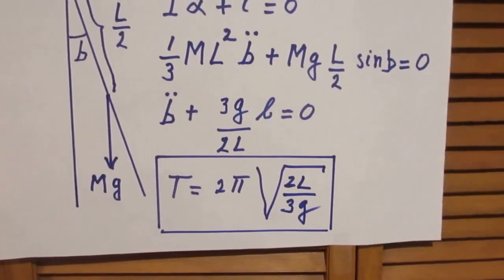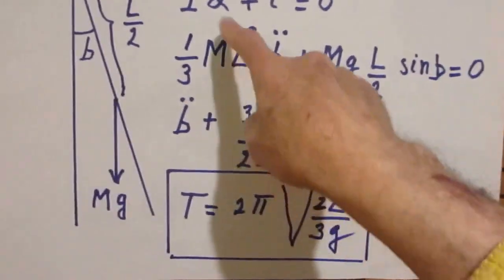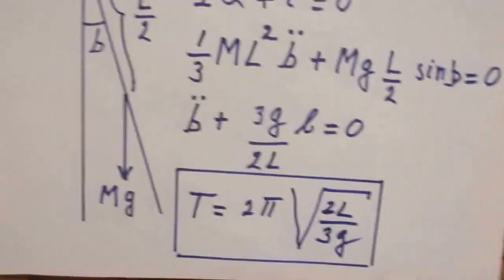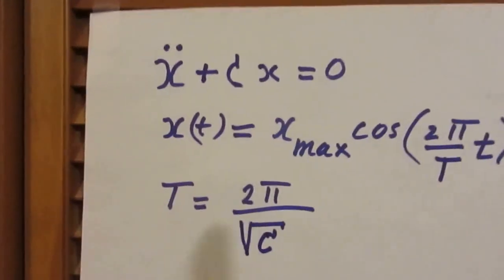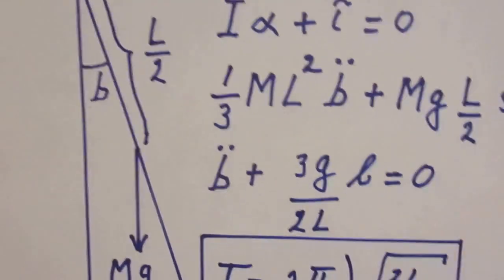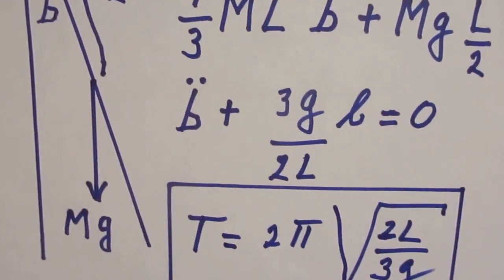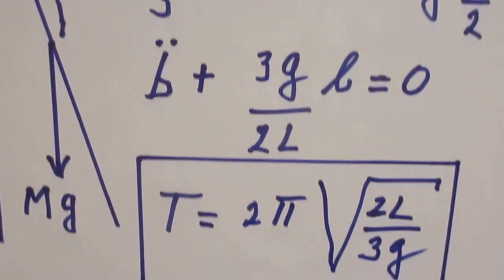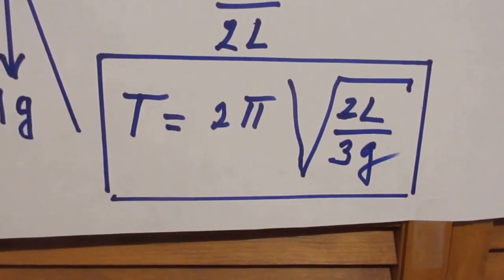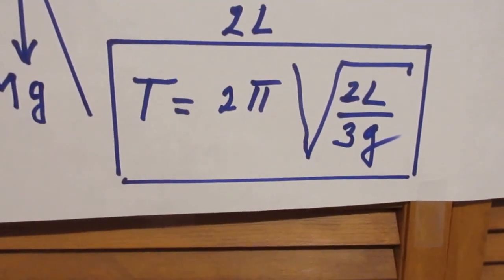If you now massage that equation a little bit, you get rid of your m's, you always do, you lose an L, and if I write it down in the most simple form, which reminds you of this form, then you will get this equation. B double dot plus 3G over 2L times B is zero. And lo and behold, that would then immediately give you that the period T is 2pi times the square root of 2L over 3G.